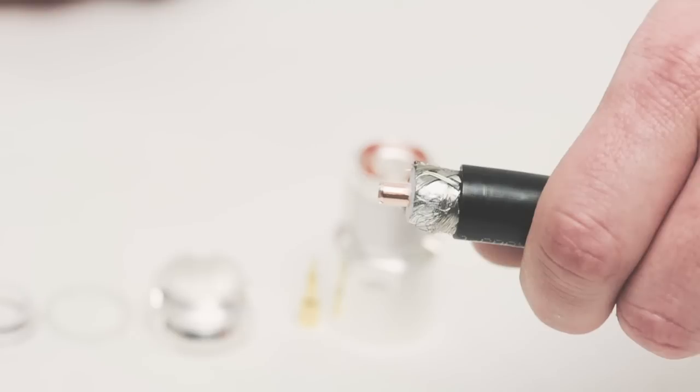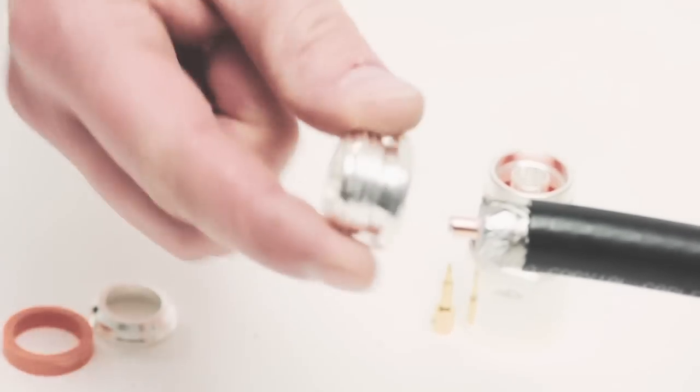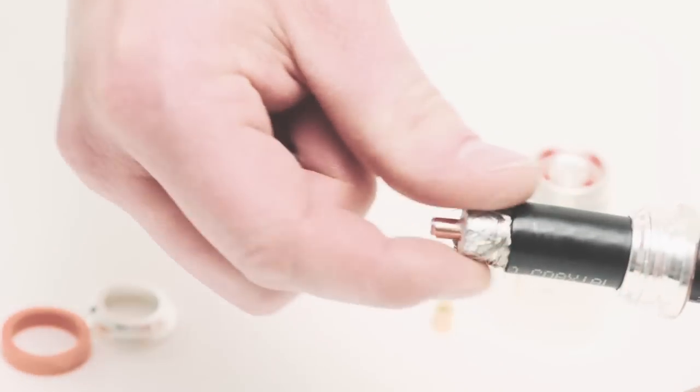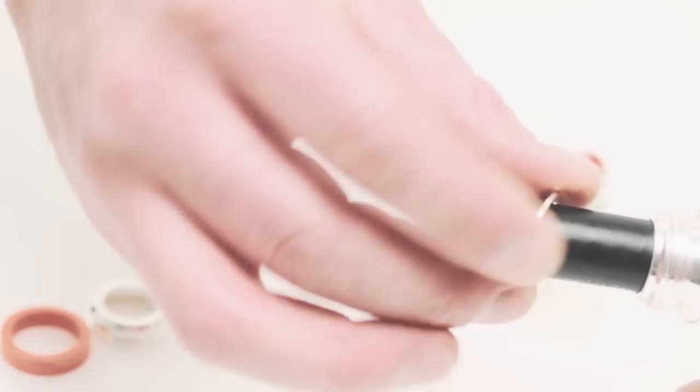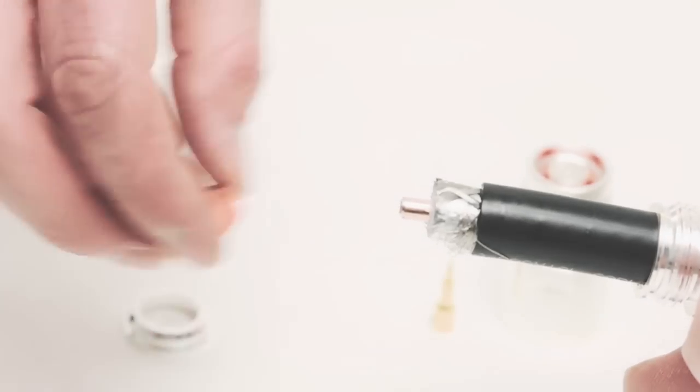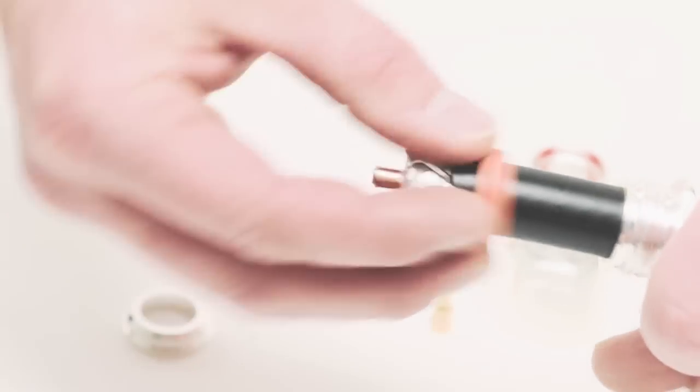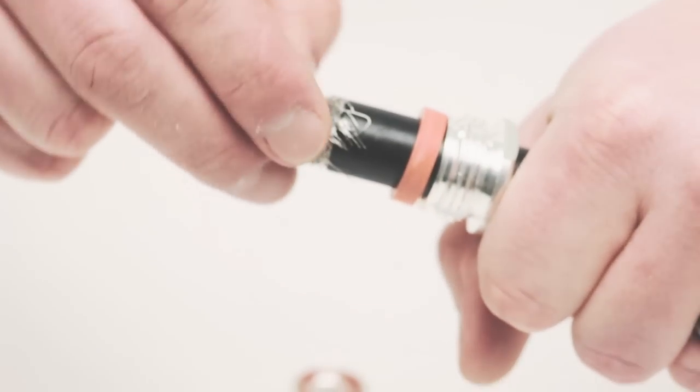Slide the individual pieces of the connector onto the LMR 600 cable. Once the O-ring is on the cable, peel back the brake.